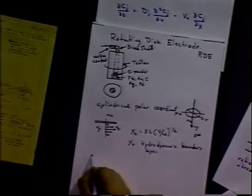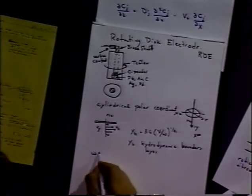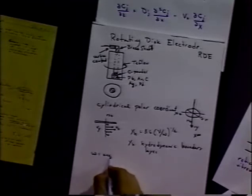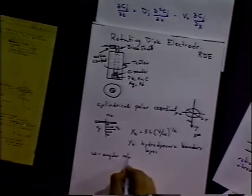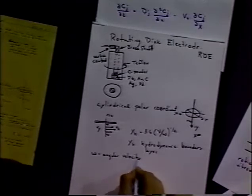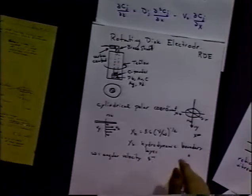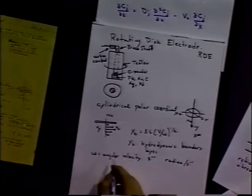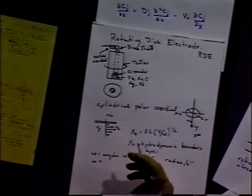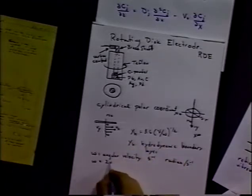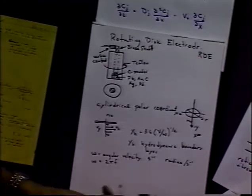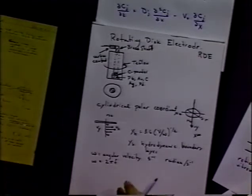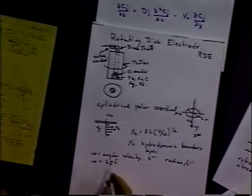These units we have to worry about. Omega is often used for angular velocity, with units of reciprocal seconds—radians per second. It's related to frequencies in hertz by the relationship 2πf.